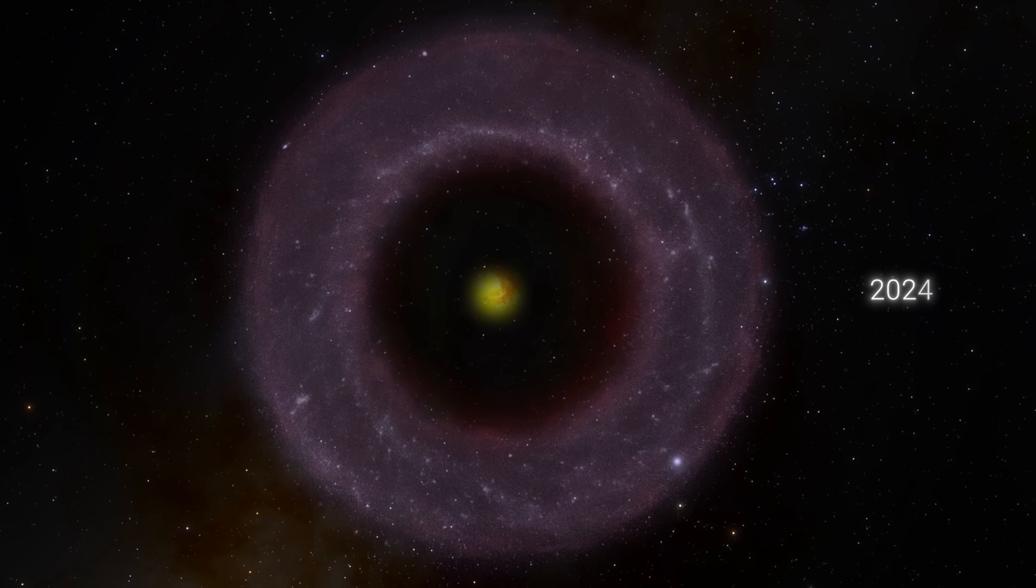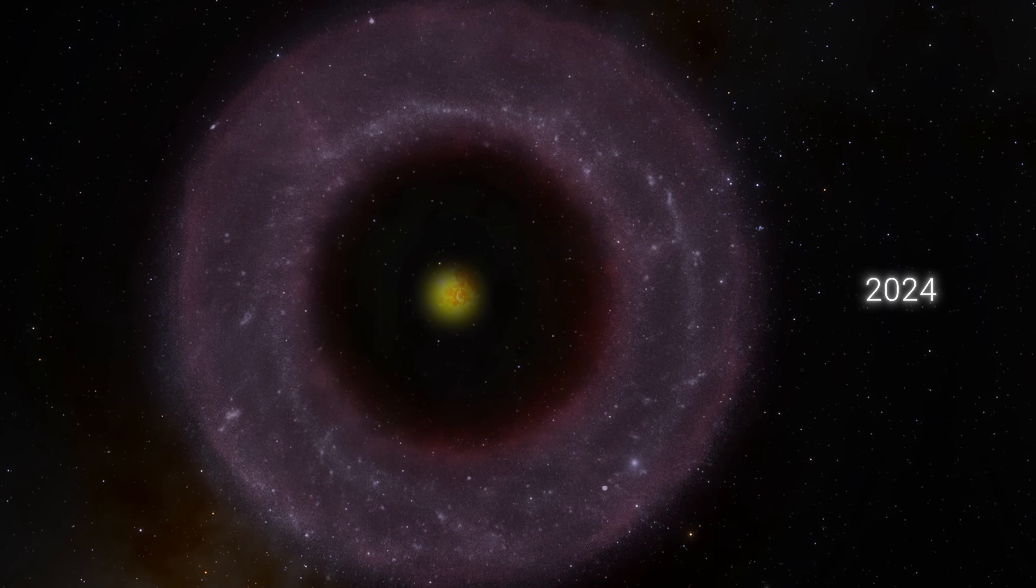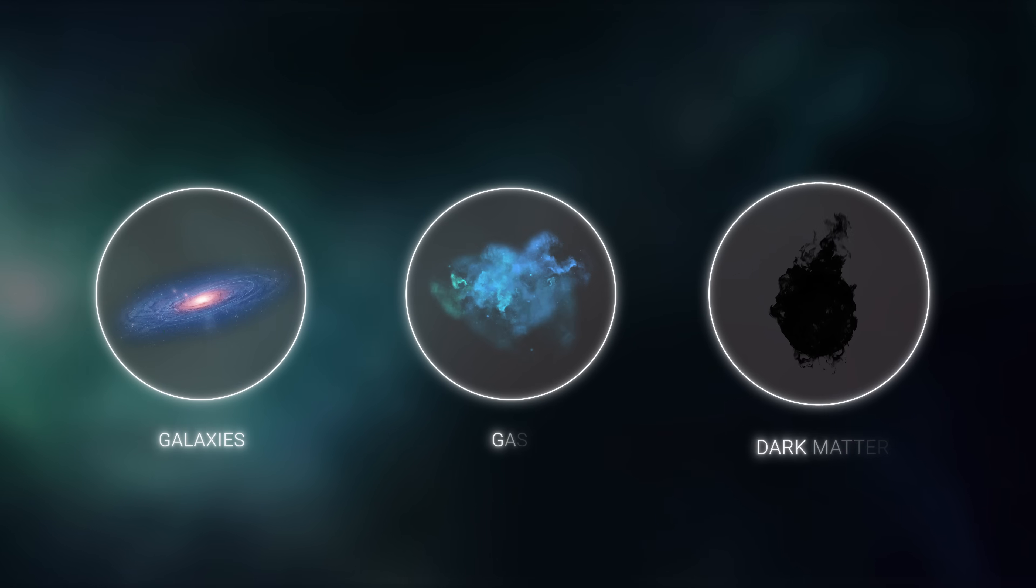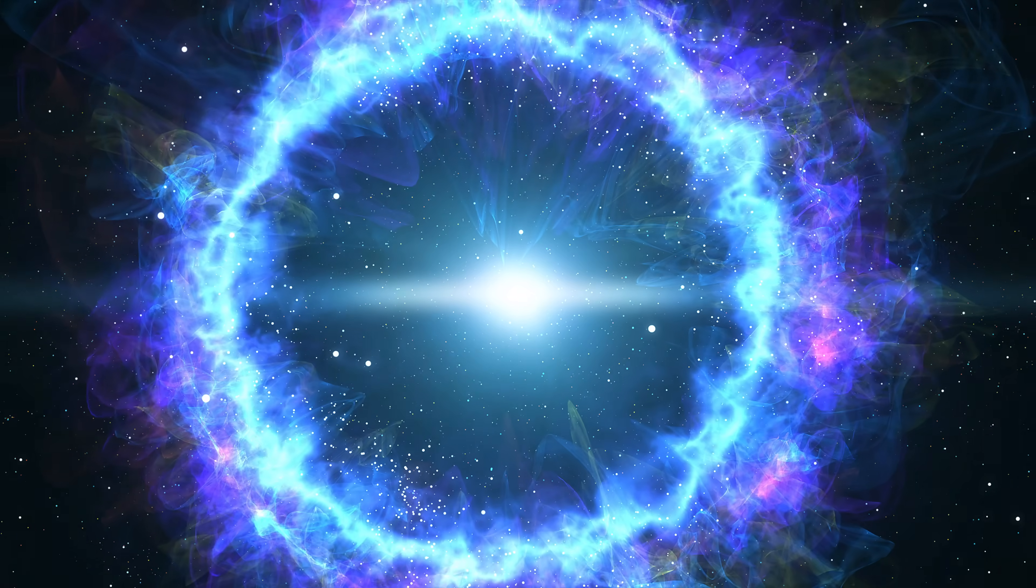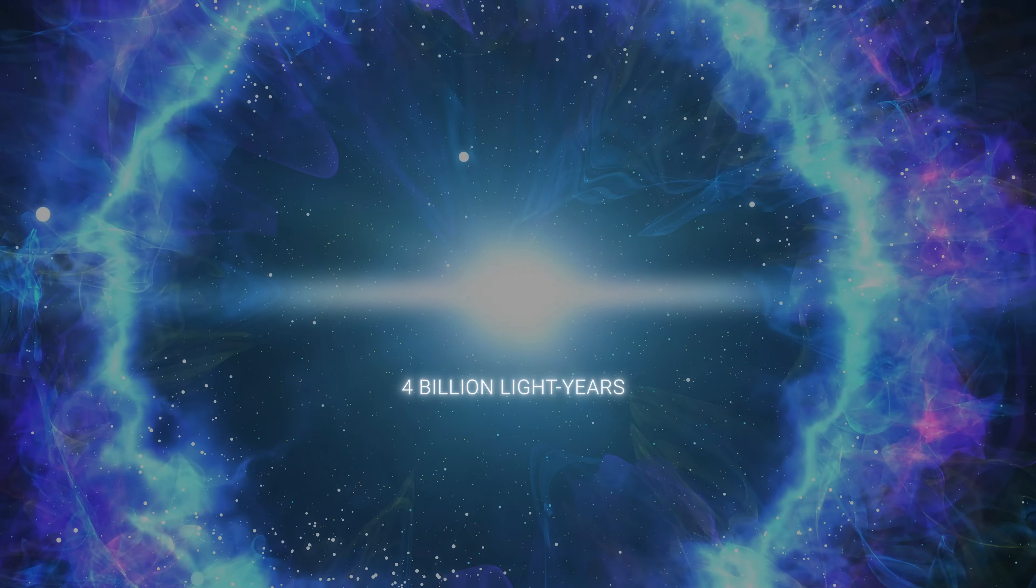Discovered following the Giant Arc in early 2024, the Big Ring represents another monumental force in astronomy. The structure forms a celestial loop of galaxies, gas, and dark matter intertwined in outer space with a circumference of about 4 billion light-years.